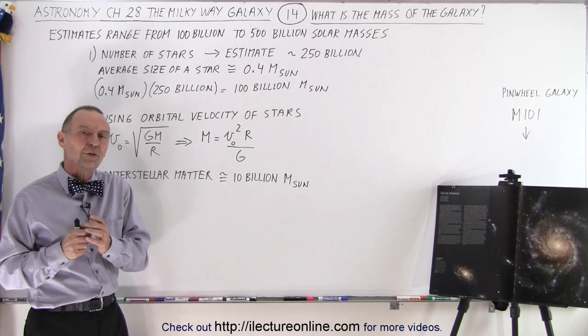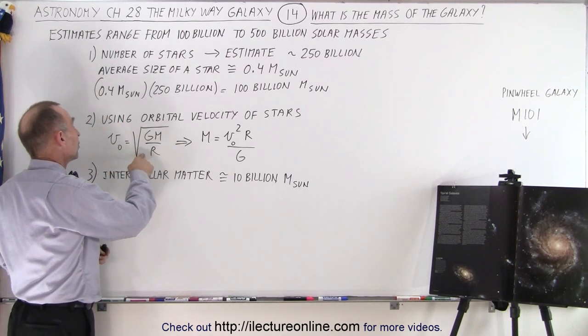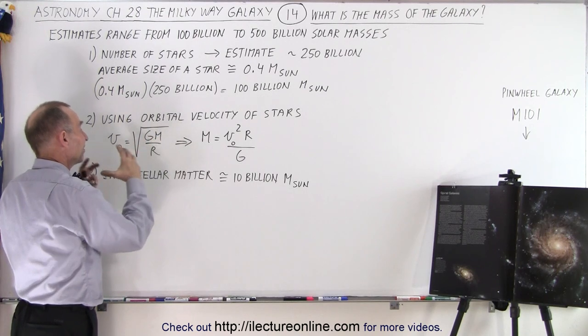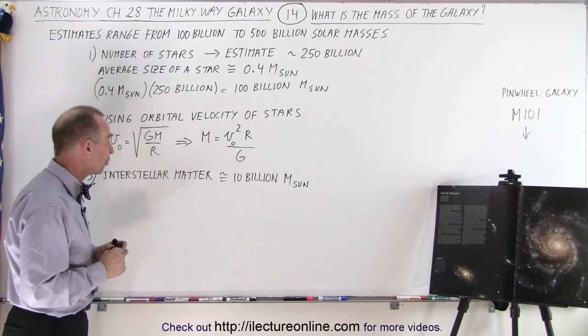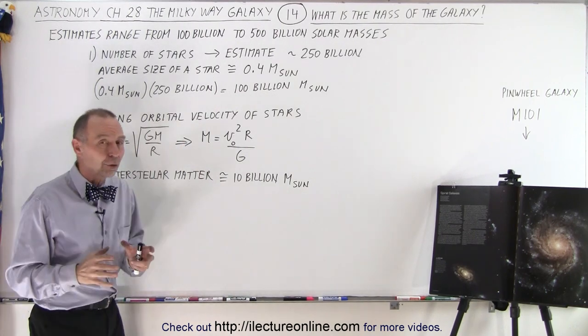And then, of course, we have the orbital velocity equation, where we have the square root of g times the mass of what's inside the orbit, divided by the radius of the orbit. And then we can take that equation and find the mass.